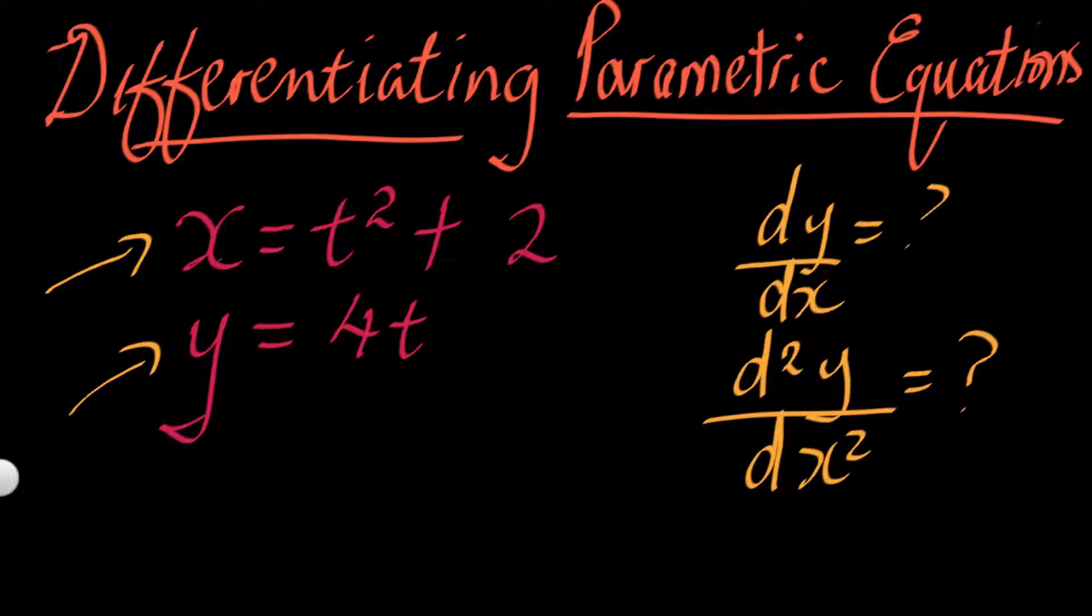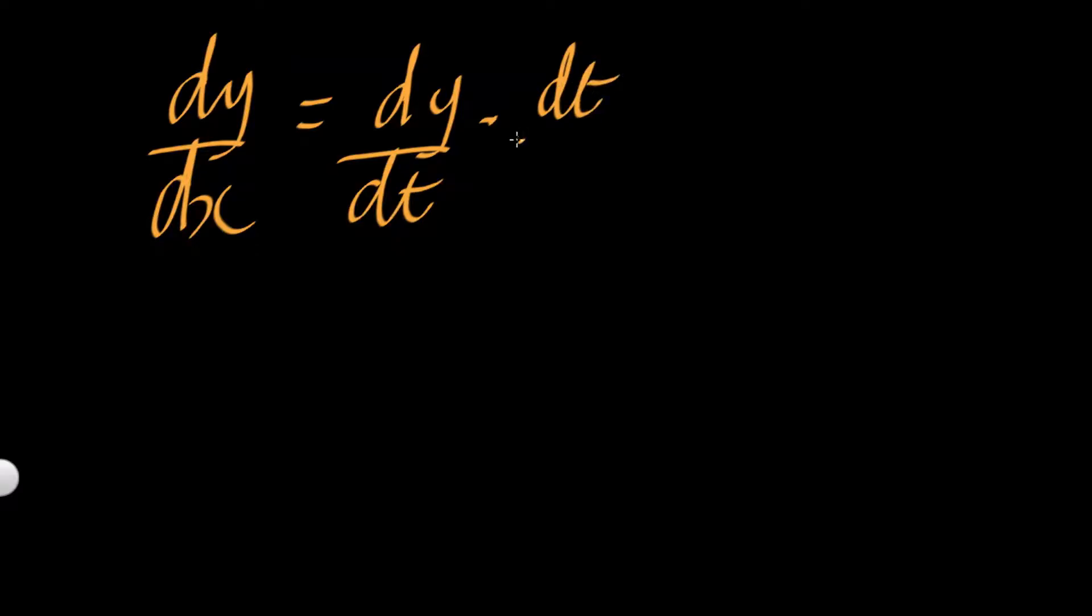So these two are what we call parametric equations. In calculus you may be required to find this derivative dy/dx or second derivative d²y/dx². This is how you do it: you rely on formulas. These are the two formulas that you're going to deal with. We have for dy/dx we use this formula that says dy/dt multiplied by dt/dx.